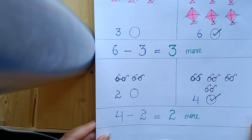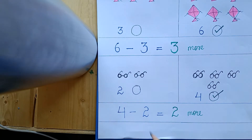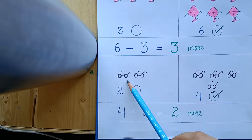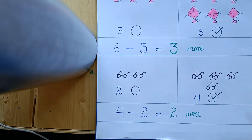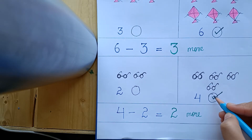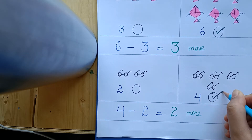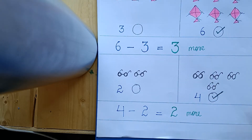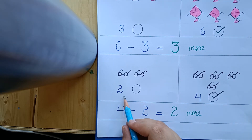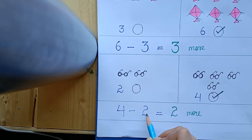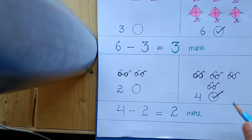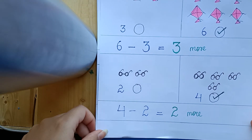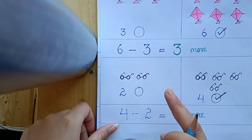Let's go to the next example. Here a collection of spectacles is given. Let's count: one, two — in this collection there are two spectacles. Now this collection: one, two, three, four — in this collection there are four spectacles. So clearly this collection has more things, so tick it. Then we need to know how many more — bigger number minus smaller number. Four minus two equals two more. So in this collection there are two more spectacles as compared to this collection.